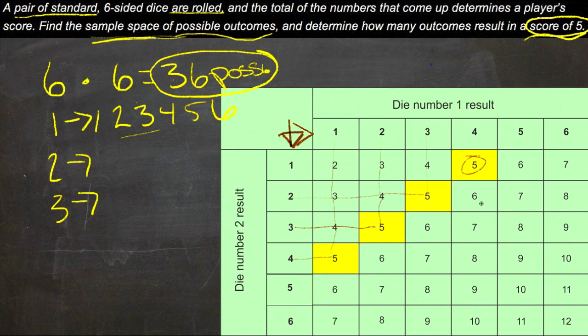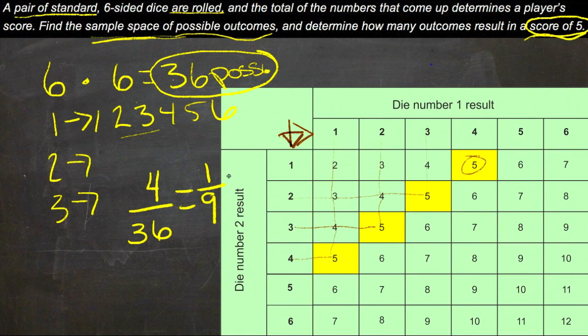Out of the 36 possibilities, six times six, we end up with a total of four that could give us a score of five points. So our sample space is 36 and the number of possibilities that could be five points is four. So really we have a four out of 36 chance of getting a score of five. We could reduce that to one-ninth.